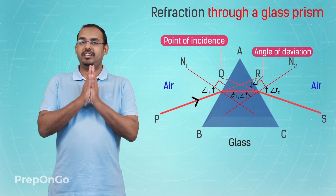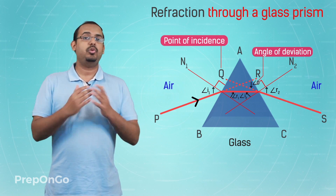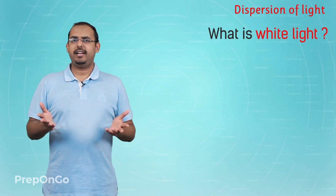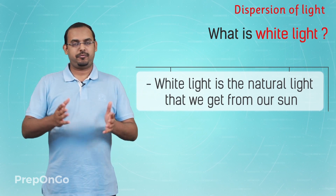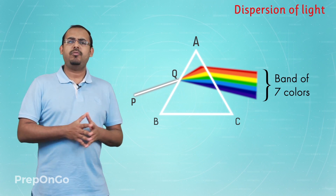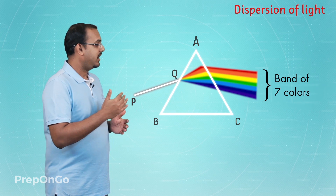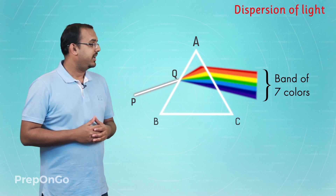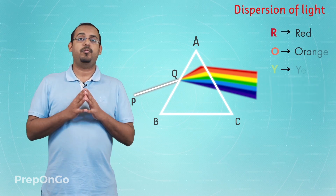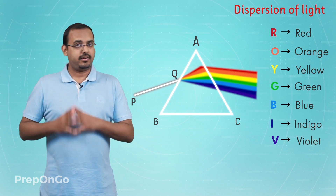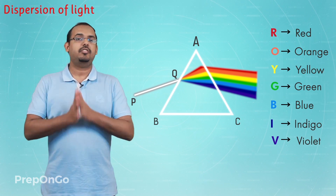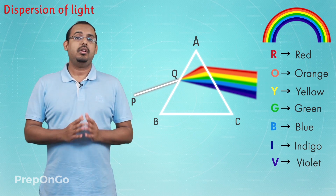Now we will try and understand about the dispersion of light with a glass prism. Let us take this glass prism and understand the phenomenon of dispersion of white light. White light is nothing but the natural light that we get from our sun. When we incident a white light ray on one of the rectangular faces of this glass prism, what we observe is that the light coming out of the opposite rectangular face is actually a band of seven different colored light rays. These seven different colors in order are violet, indigo, blue, green, yellow, orange, and red. These seven colors in this exact same order also appear in a rainbow.